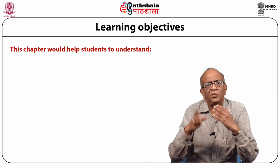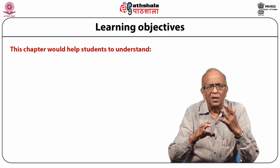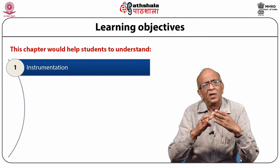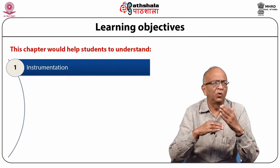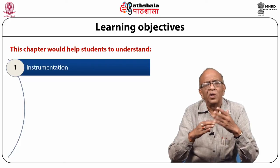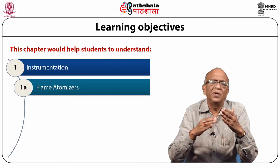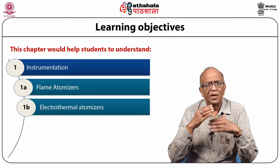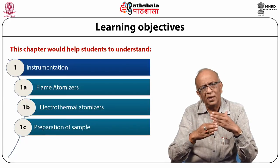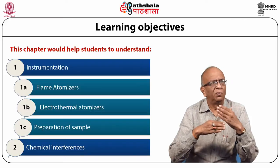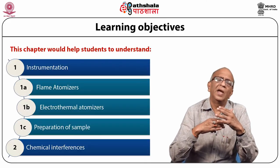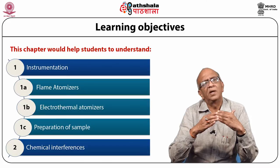The objectives of this module: you will learn the instrumentation of atomic absorption spectroscopy. The key difference from molecular spectroscopy is that it involves atomization, which can be carried out by flame atomizers, electrochemical atomizers, or various other methods. You will also learn sample preparation, and importantly, how to study and remove chemical interferences, because if some impurities are present they interfere in the analysis.